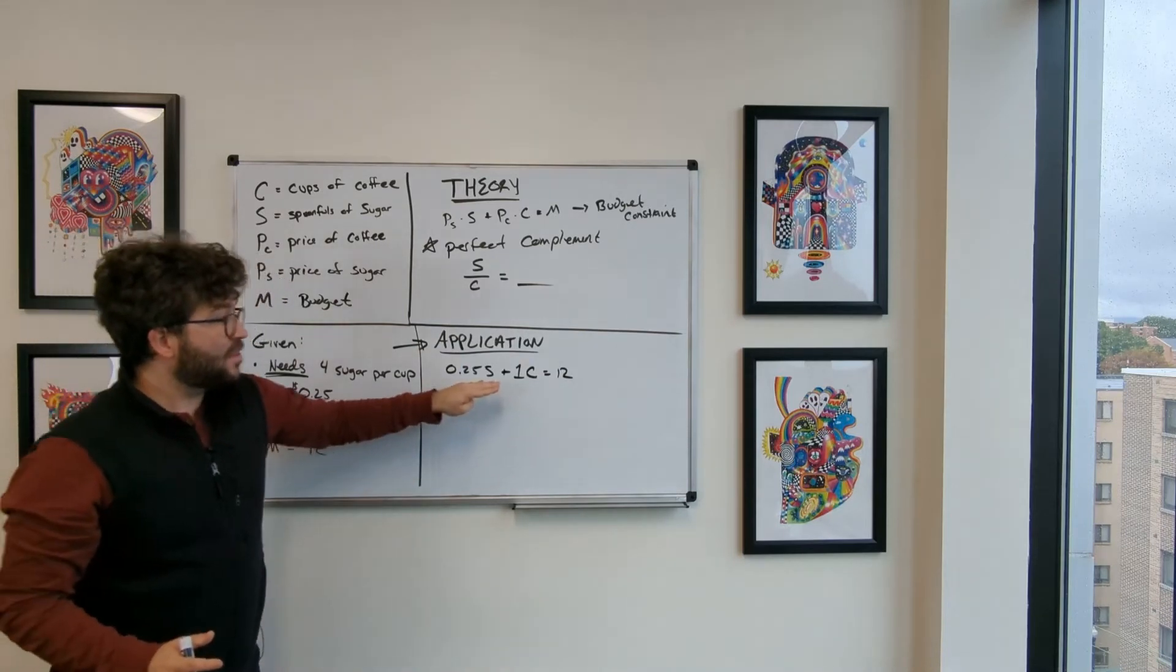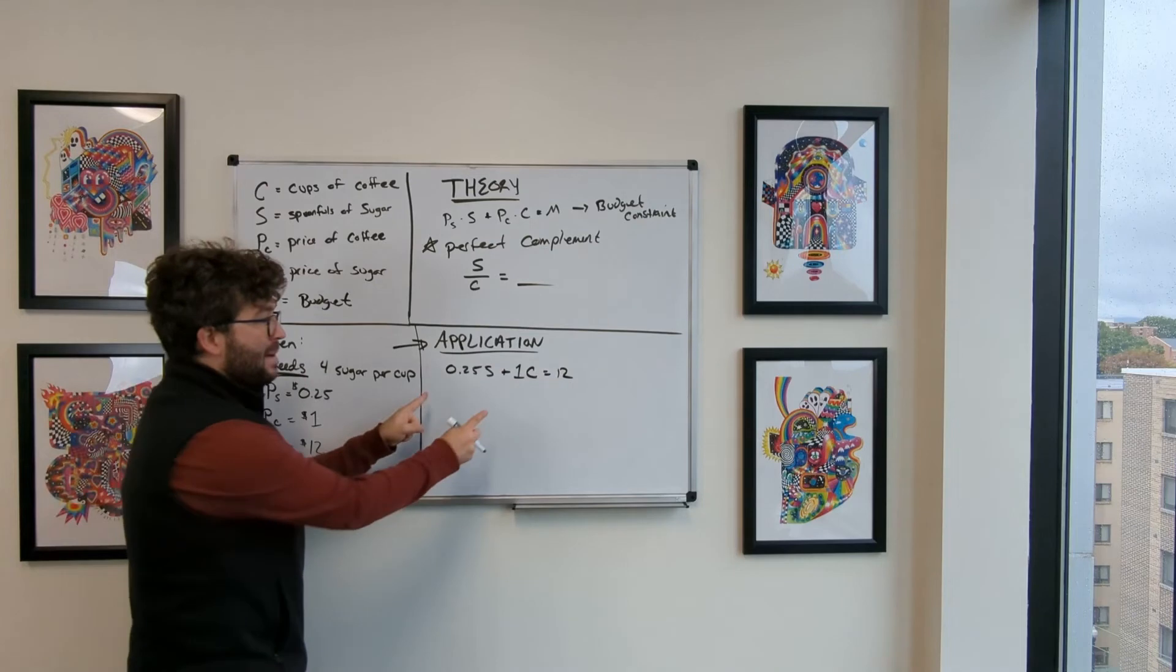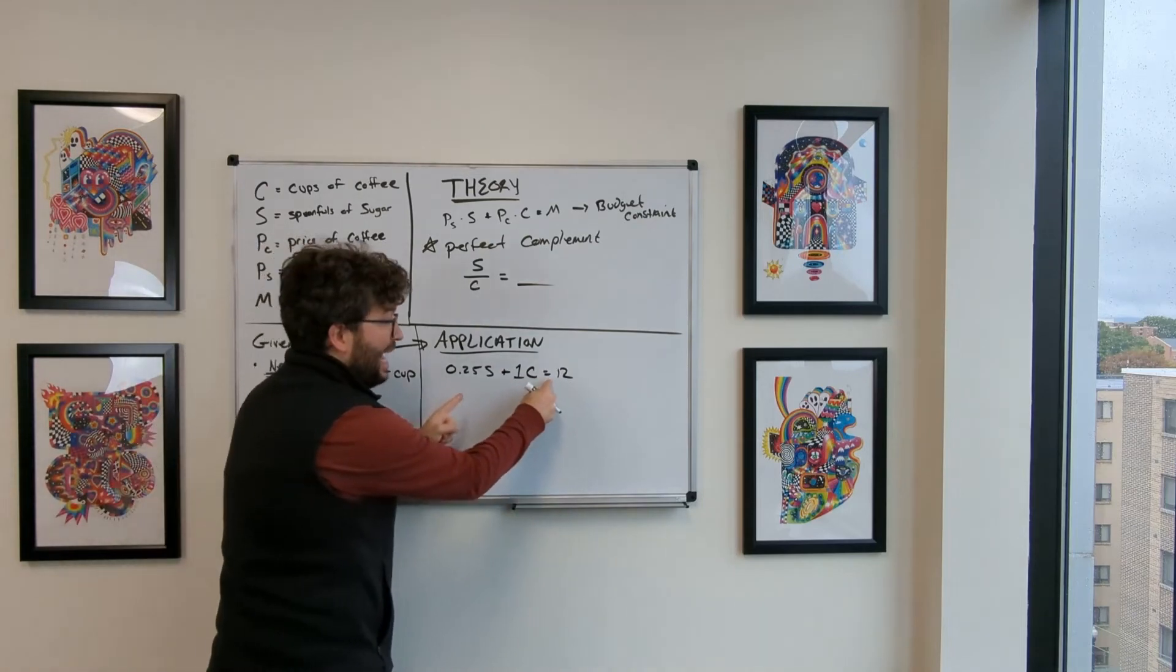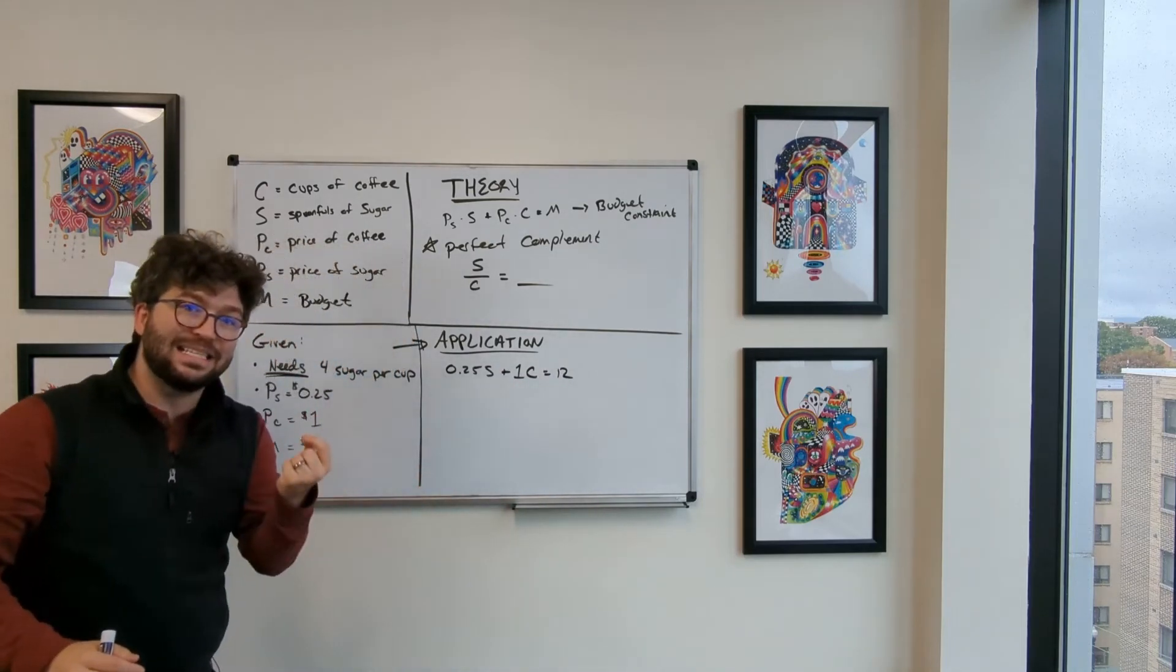This is our budget constraint. I know that this needs to be equal. The amount that I spend on sugar and coffee has to equal 12 in order to optimize this problem.